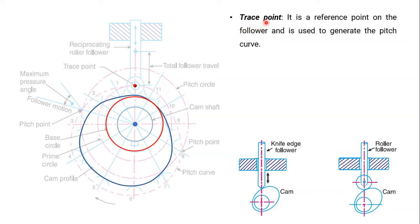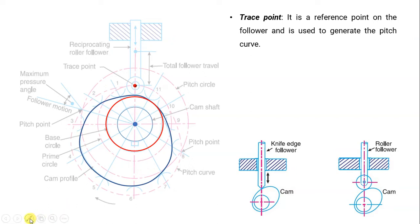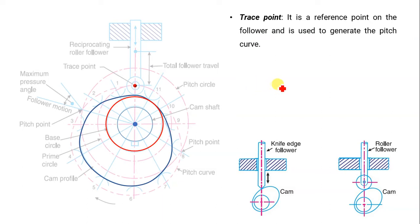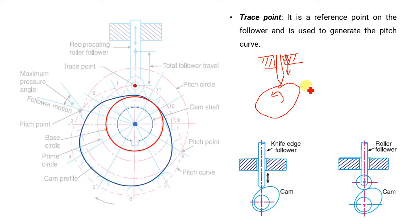The next terminology is trace point. By the name you can guess the meaning — it is the point that we are tracing while the follower is moving around the cam, or the cam is rotating. One thing to keep in mind: in the cam and follower mechanism, the cam is actually rotating and the follower has reciprocating motion — up and down — in a fixed guide only. That is the actual cam and follower mechanism.